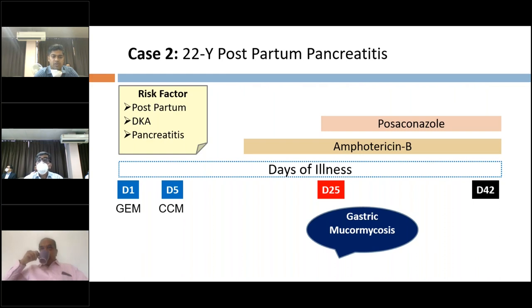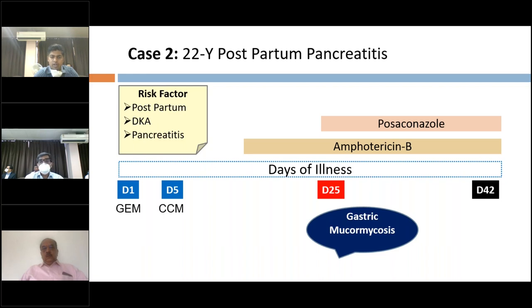To summarize this case over 42 days: on day 1 she presented to gastro-medicine, on day 5 she was admitted to CCM ICU. On day 25 she was diagnosed with mucormycosis, her dose of Amphotericin was increased and changed to liposomal Amphotericin B, and enteral posaconazole was added. On day 42 she succumbed to her illness. Risk factors in this case were the postpartum state with diabetic ketoacidosis and pancreatitis.